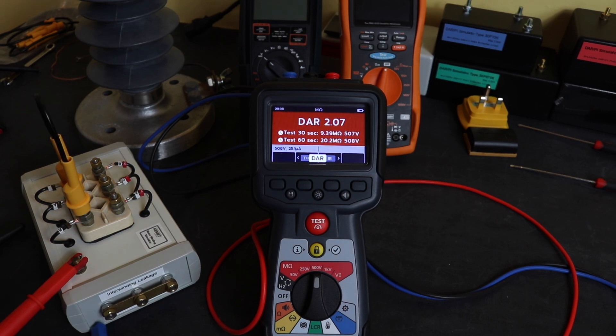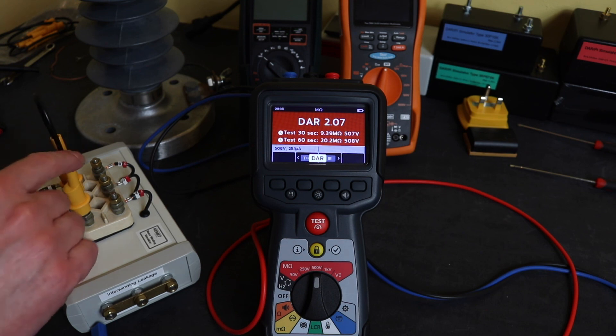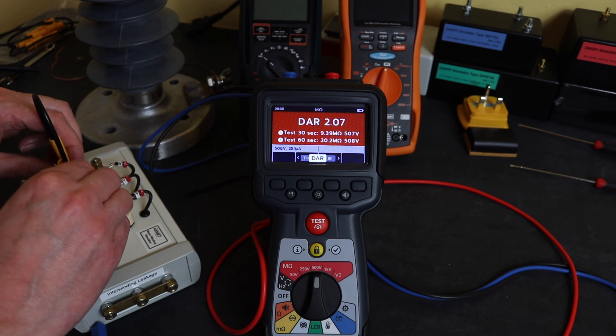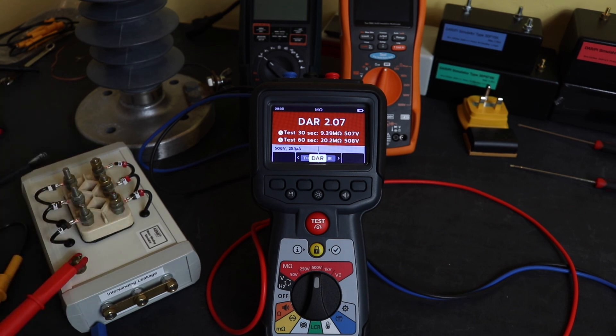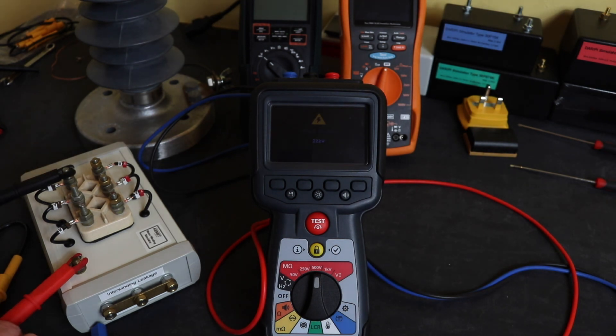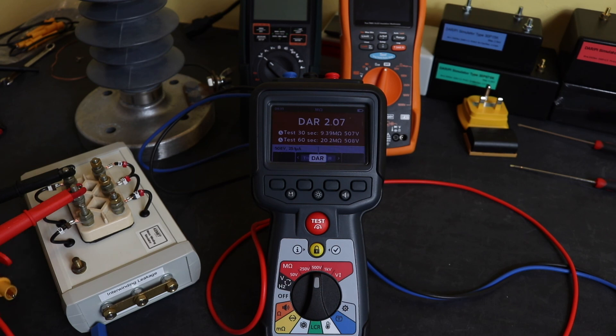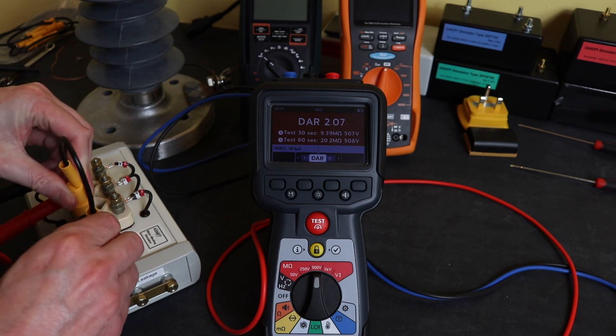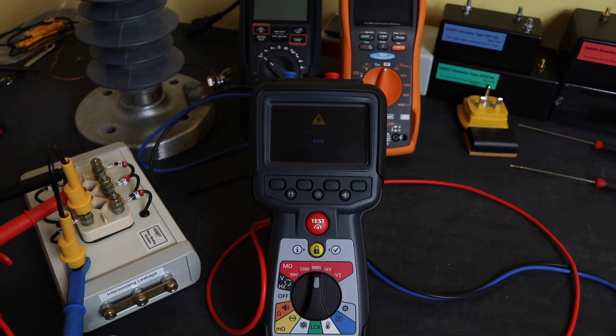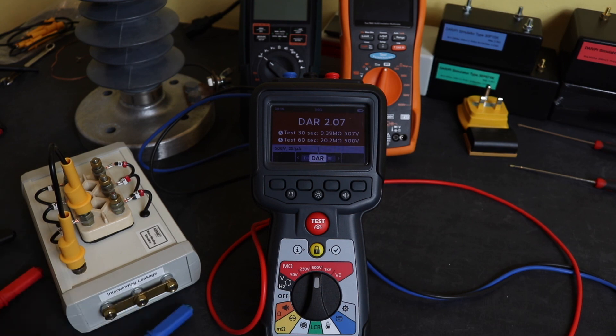What I can also do is change this configuration around to give more diagnostics. Instead of taking these two phases into the guard terminal, I could put this on one phase to do a phase-to-phase measurement and take this one down to earth. I could put the guard terminal onto the chassis. That way I'm measuring the true insulation value between these two phases and everything else, any other leakage, will be discarded.